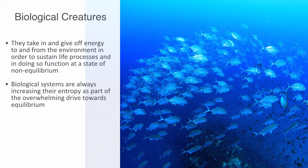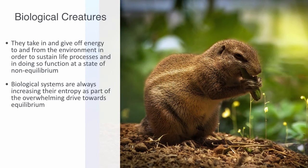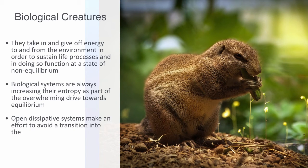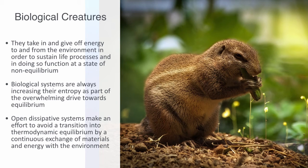In order to avoid this move towards equilibrium, they have to maintain themselves on some energy gradient. Just as the input and dissipation of energy within the water in the pan enable the formation of non-equilibrium patterns of convection cells, it is the constant input and dissipation of energy that enables biological creatures to exist far from equilibrium. Open dissipative systems make an effort to avoid a transition into thermodynamic equilibrium by a continuous exchange of materials and energy with their environment.